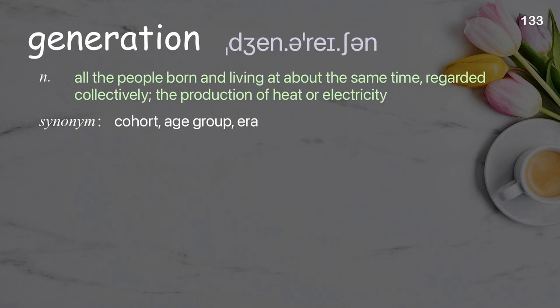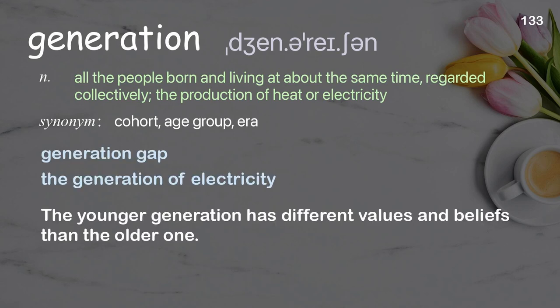Generation: all the people born and living at about the same time, regarded collectively; the production of heat or electricity. Examples: generation gap, the generation of electricity. The younger generation has different values and beliefs than the older one.